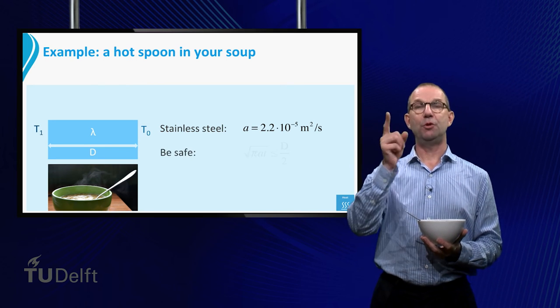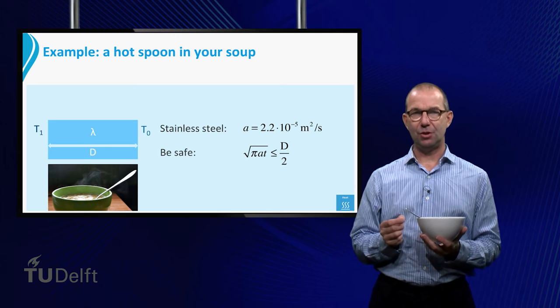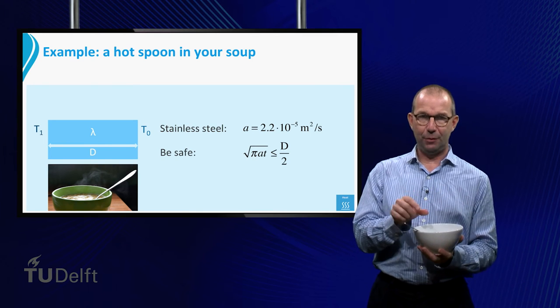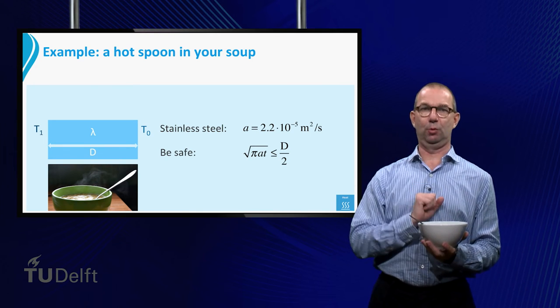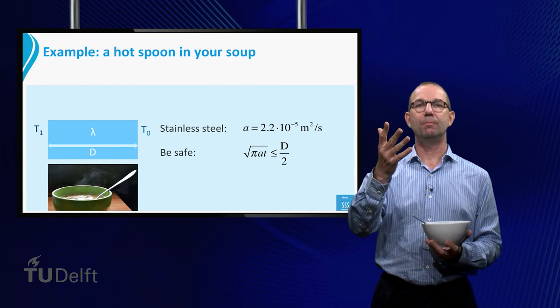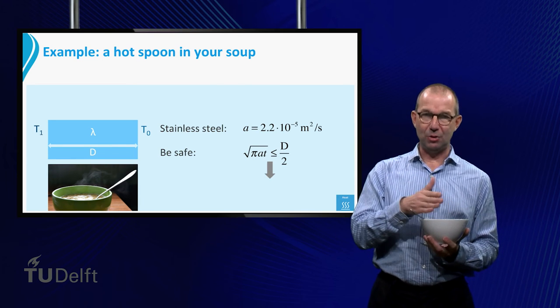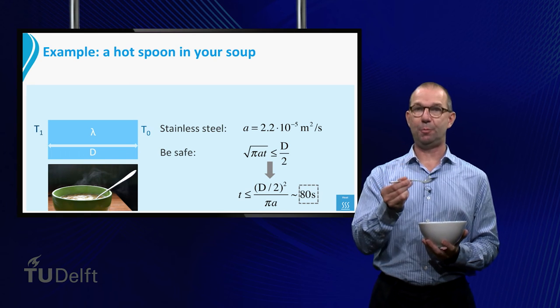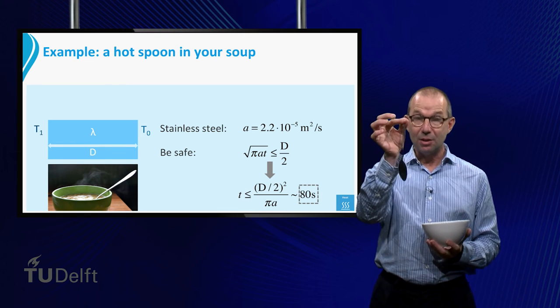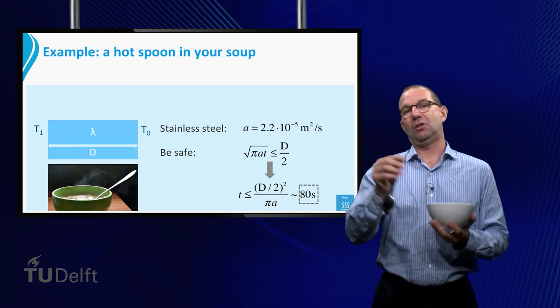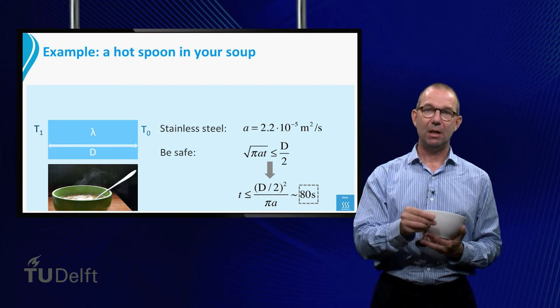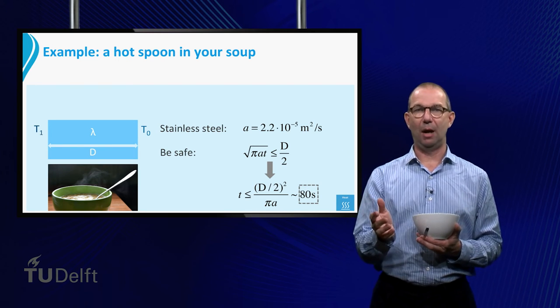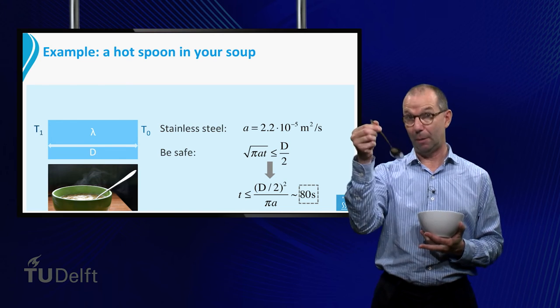To be on the safe side, if you don't want to burn your fingers, take that the penetration depth is only half way your spoon. From this we compute that it takes about 80 seconds for the heat to reach halfway your spoon. The end is reached at 320 seconds, some 5 minutes. Thus, in between these two times it becomes tricky picking up your spoon.